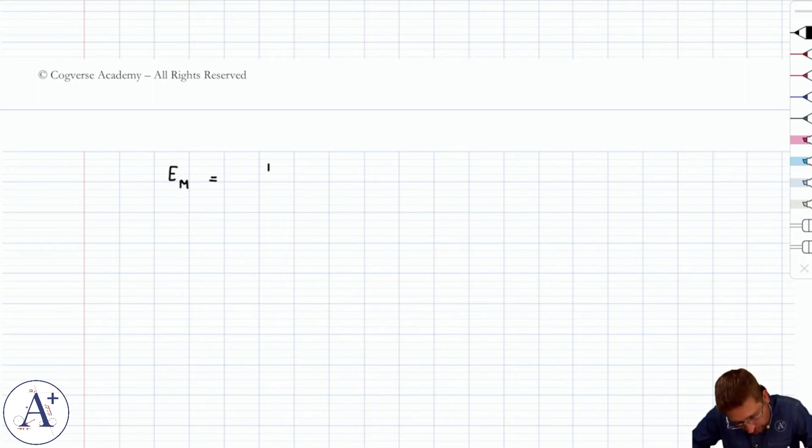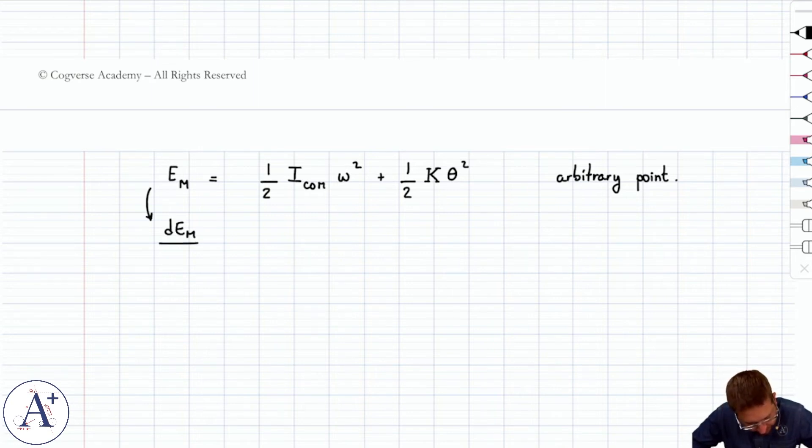Mechanical energy at an arbitrary point is going to be one-half I center of mass omega squared plus one-half kappa theta squared. And this is a constant. This entire quantity remains constant throughout the oscillation. So if I take the derivative of both sides, I know that the left-hand side is going to give me zero, and the right-hand side is going to give me one-half I center of mass two omega, but careful, omega itself is a function of time, so the chain rule requires that you multiply by d omega dt.